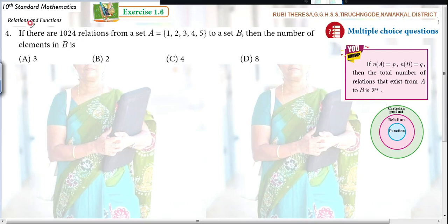Now listen here, if there are 1024 relations from your set A equal to 1, 2, 3, 4, 5 to your set B, then the number of elements in B is dash.